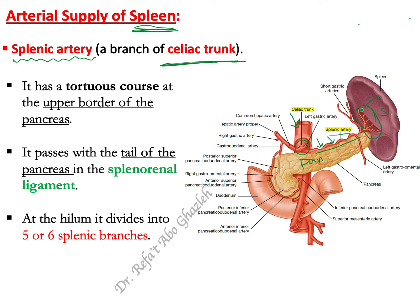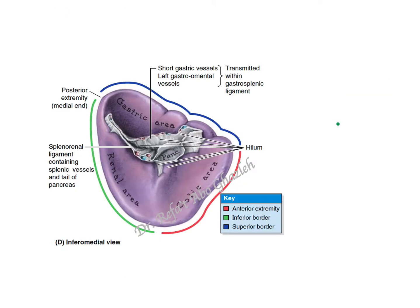At the hilum, the splenic artery divides into five or six branches. Most importantly, the splenic artery, the splenic vein, and the tail of the pancreas all gain access to the hilum of the spleen through the splenorenal ligament — the ligament between the hilum of the spleen and the anterior surface of the left kidney. There is another video about the splenorenal ligament you can watch.